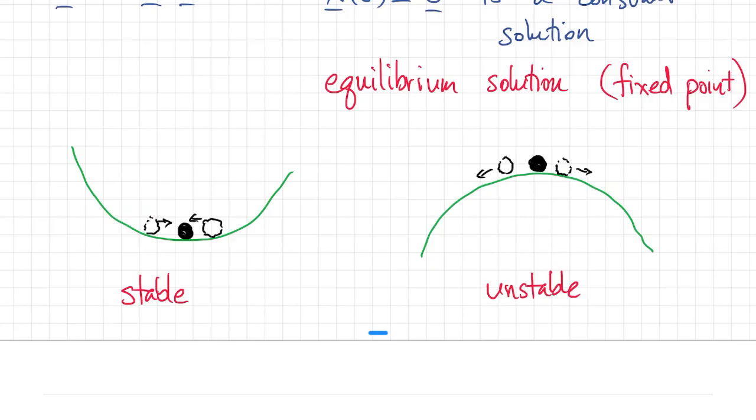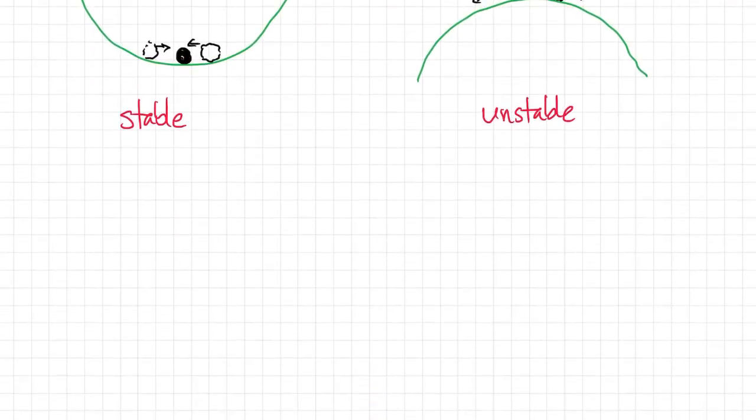In the first case, we say the equilibrium is stable, and in the second case, we say it is unstable.